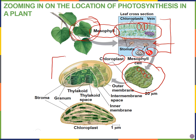Zooming in on one chloroplast — which we talked about during exam 1 material — like mitochondria, they have two membranes with an intermembrane space in between. Inside, where the liquid portion is — the stroma — we have these membrane stacks called granum (singular) or grana (plural). And these are called our thylakoids — these are our thylakoid membranes.